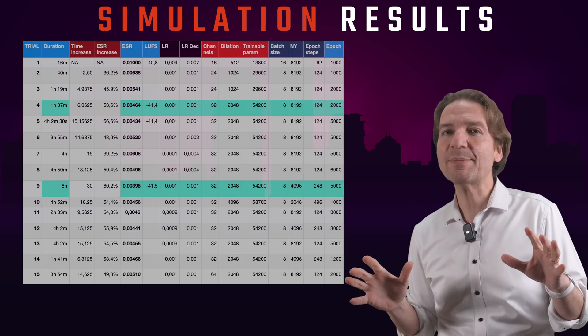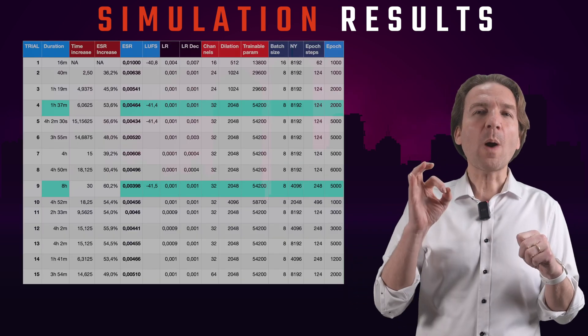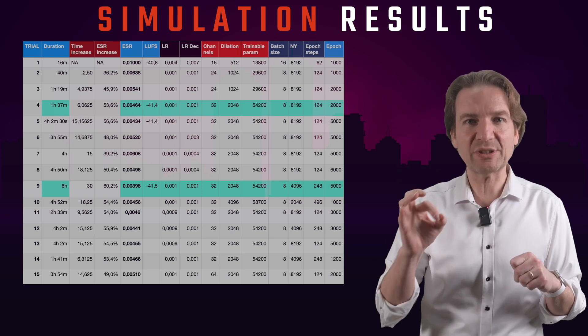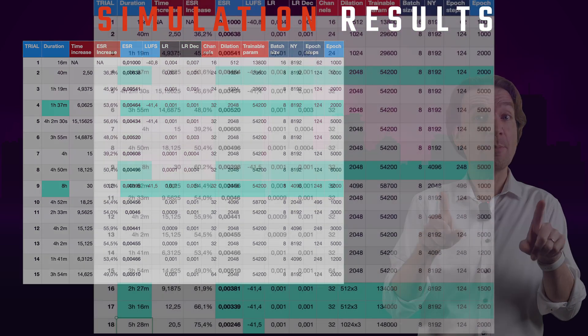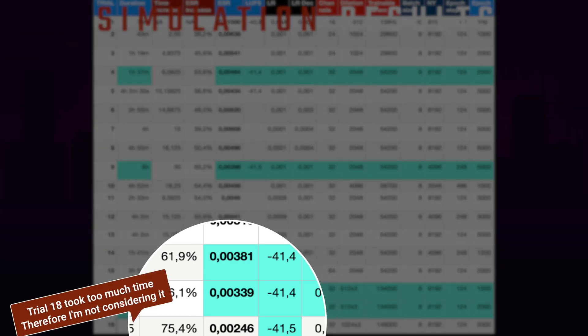First of all, the trainable parameters jump up to 134,000. So this is the biggest neural net I have trained so far. But what about the results? Let's see the results together. Wow.